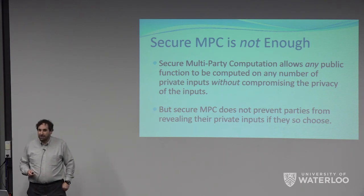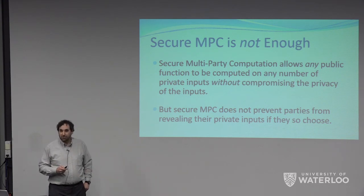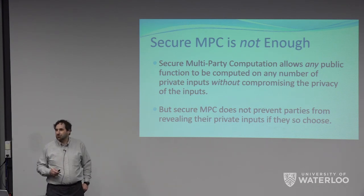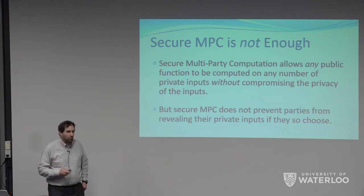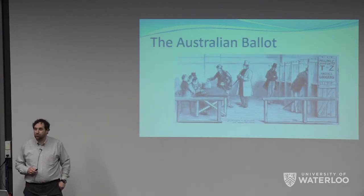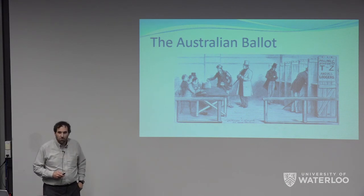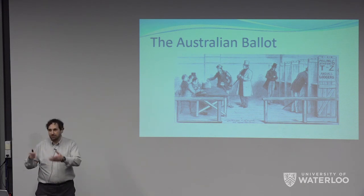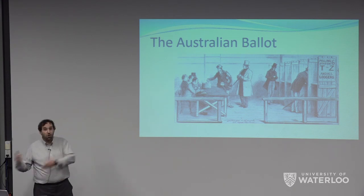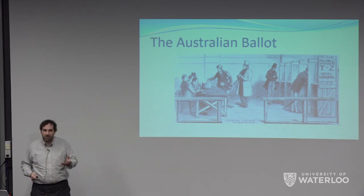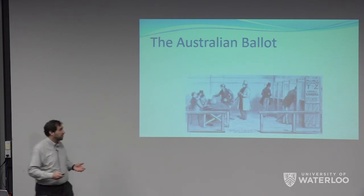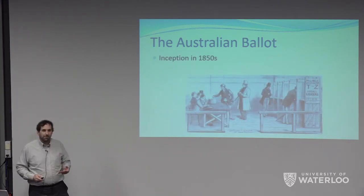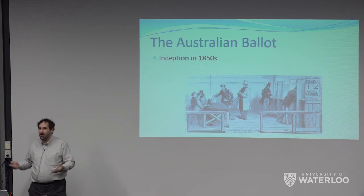There's a technology that was a great innovation over a century ago that solves this problem in a very powerful way, and we don't even recognize it as a technology anymore — it's called the Australian ballot. The idea was that people vote privately within a public setting where it can be publicly monitored and enforced that their vote is actually private, that they are not being coerced. It was first developed in the 1850s.